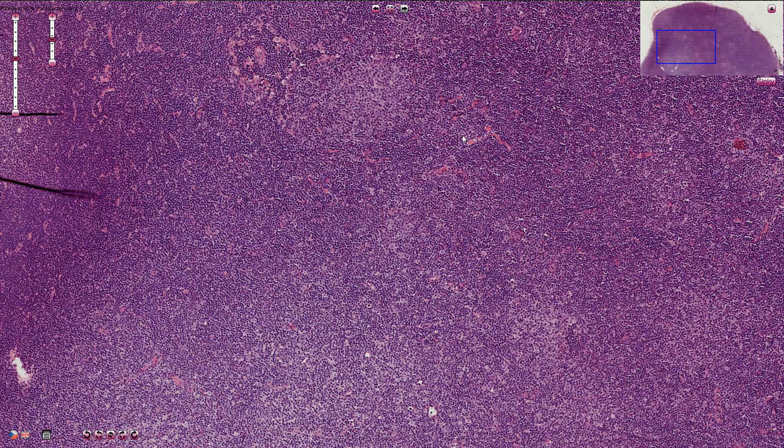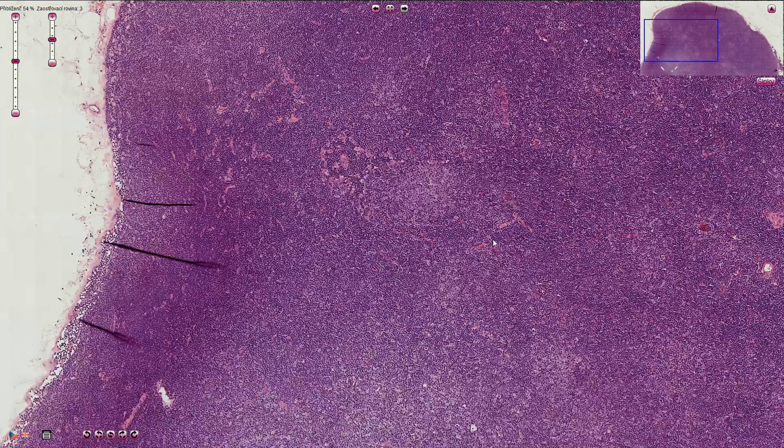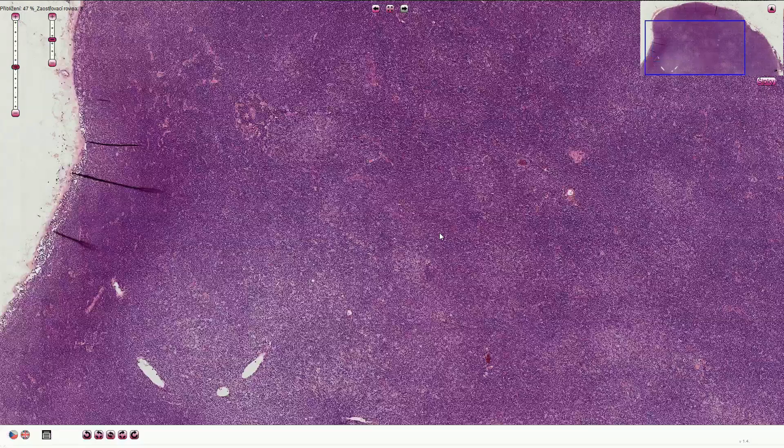However, the cells in marginal zone lymphoma usually have monocytoid characteristics with more voluminous and light cytoplasm. Okay, so chronic lymphocytic leukemia or small lymphocytic lymphoma. Thanks for watching.